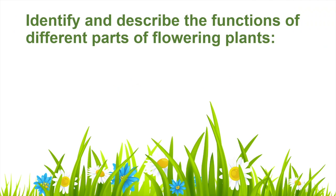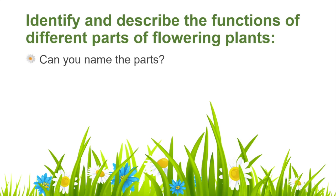In this session we will learn about the different parts of a plant and each of their functions. By functions we mean the job that each part of the plant does to keep the plant alive and to help it thrive. Before we start, can you name the different parts of a plant? There are four main parts — perhaps work from the bottom of the plant to the top.